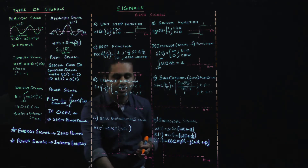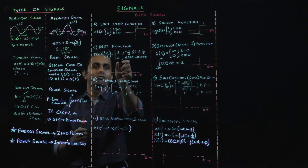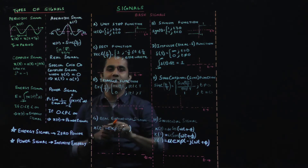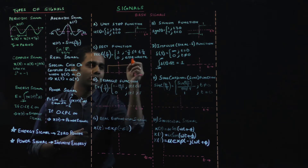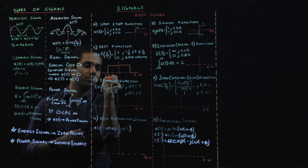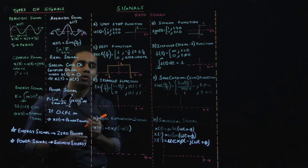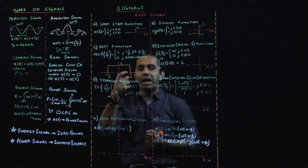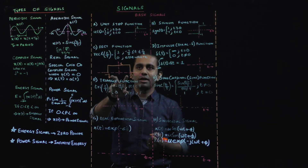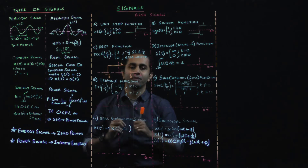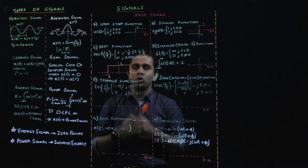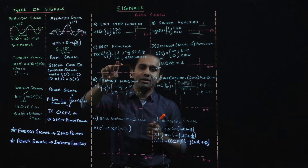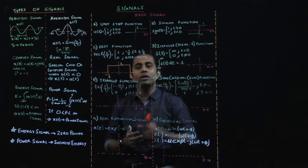Next we look at the rectangular function. The rectangular function gives a value of 1 for a small time window — from minus T/2 to T/2 — and is 0 everywhere else. This looks like a rectangle, which is where the name comes from. A special case arises when we keep reducing T and increasing the height: T becomes very small tending to 0 while the magnitude tends to infinity — that is how we define an impulse function.